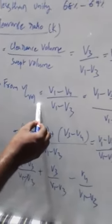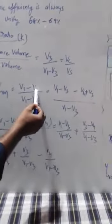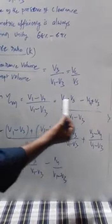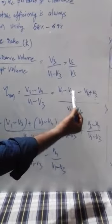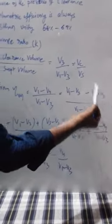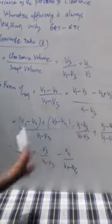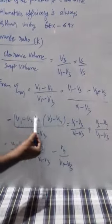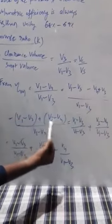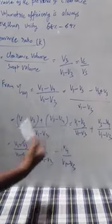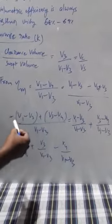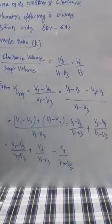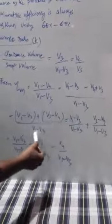From volumetric efficiency, we can write (V1 minus V4) by (V1 minus V3). Here, I am subtracting V3 and adding V3, so the value remains the same. These terms are interchanged: V1 minus V3 is the same term, and we write V3 first, then minus V4. We group these two terms — (V1 minus V3) as one term and (V3 minus V4) as another — with the denominator as usual: V1 minus V3.